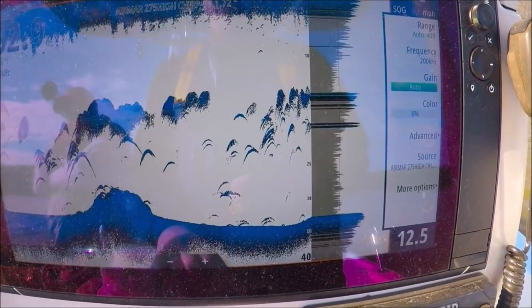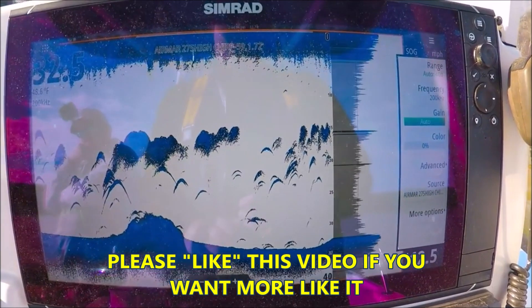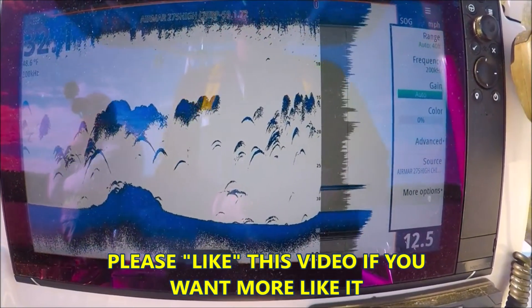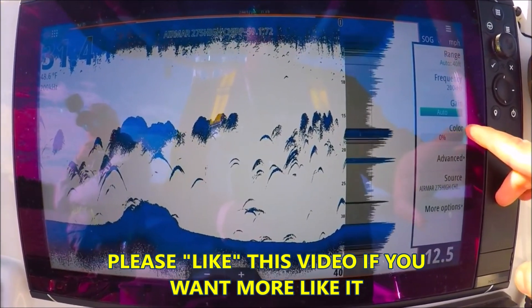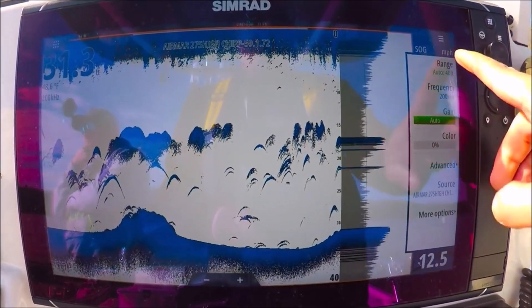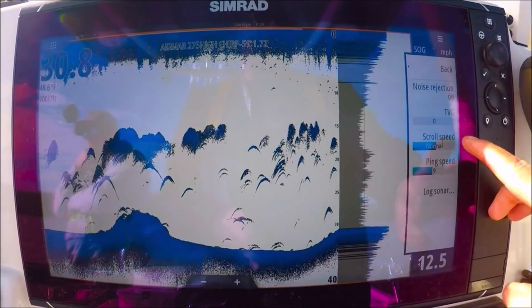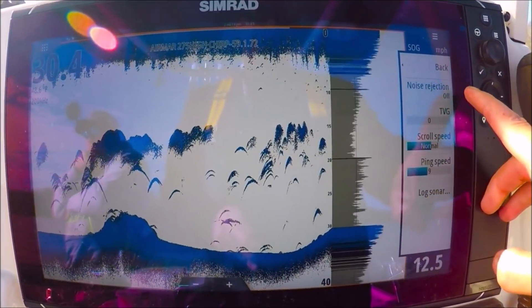Alright guys, I want to take a minute and show you how I set up my echo sounder for my NSS EVO 3. I like to put my gain on auto to get started, my color at zero. Up here in my menu, I'm going to go to advanced noise rejection off. I don't like noise rejection ever. I'd rather have a little noise on the screen than squash my returns by turning the filter on.